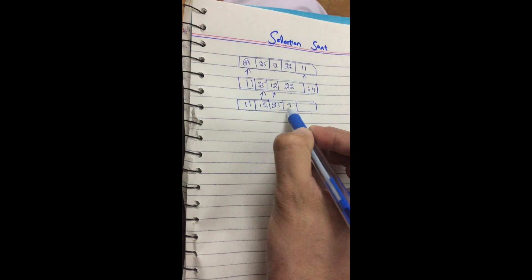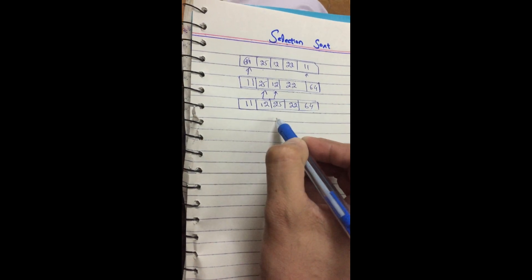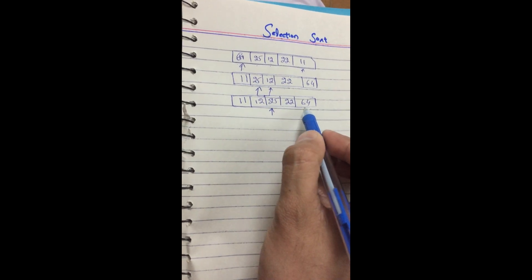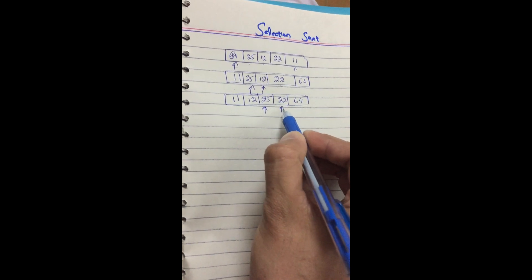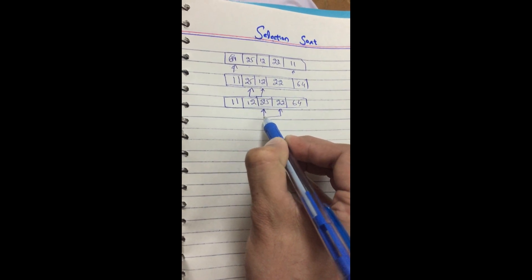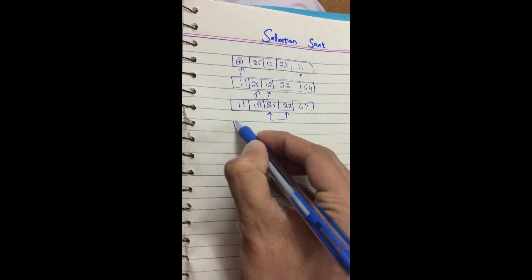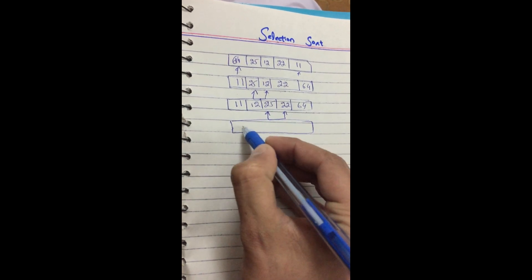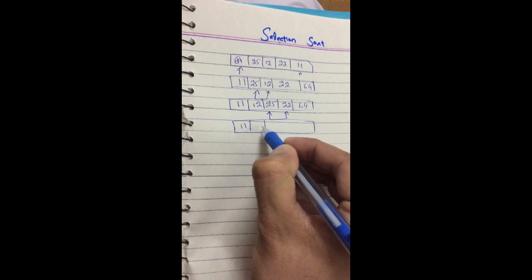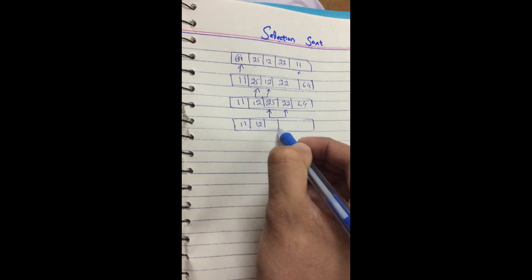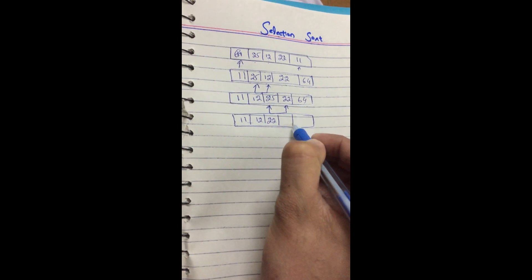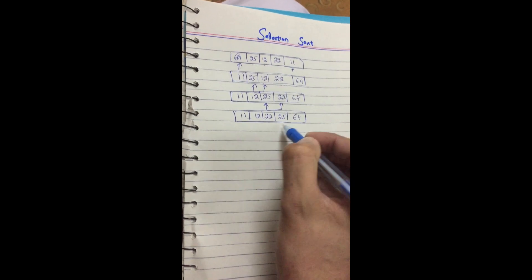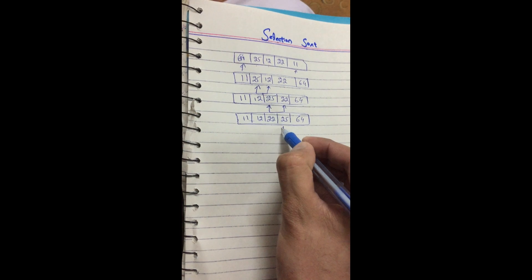Our counter is now at the third position. We check 25, 22, and 64 and find that 22 is the minimum value, so we swap the counter element with that value. The array becomes: 11, 12, then 22 and 25 are swapped, and 64 remains at the end.